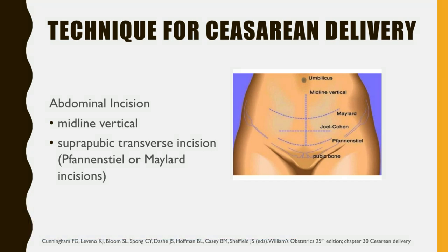Neurovascular structures — including the ilioinguinal and iliohypogastric nerves and superficial and inferior epigastric vessels — are often encountered with transverse incisions. Consequently, bleeding, wound hematoma, and neurological disruption may more frequently complicate transverse incisions compared with vertical incisions.